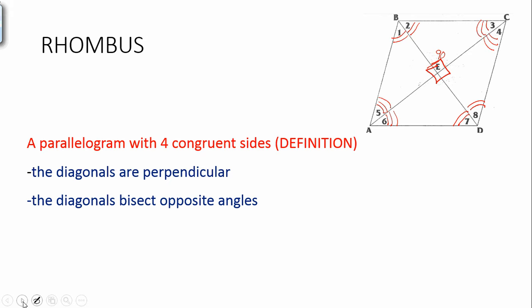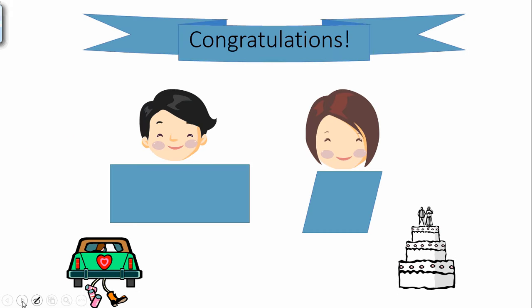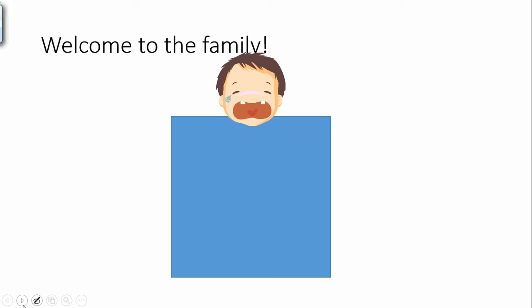Now, let me tell you a little story about rhombus and rectangle. Rhombus and rectangle were college sweethearts. In fact, they met in high school, went away to college together, learned a lot, got their degrees, decided to get married, got married, and had a little baby named Square.